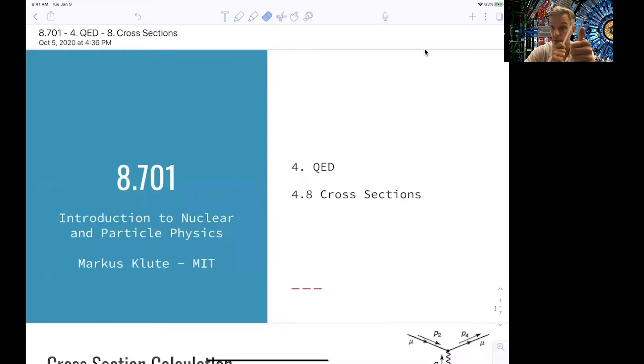We have seen how to set up a matrix element, how to treat the spin and specifically to calculate spin averaged amplitudes using Casimir's trick. I'm not saying that this is all easy now, but you have seen all necessary elements to calculate a cross-section for QED process.